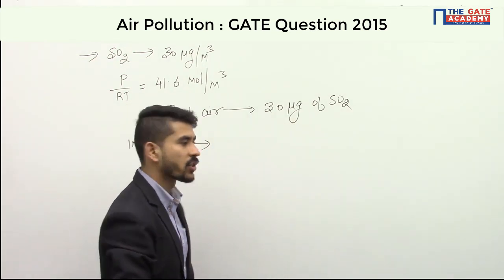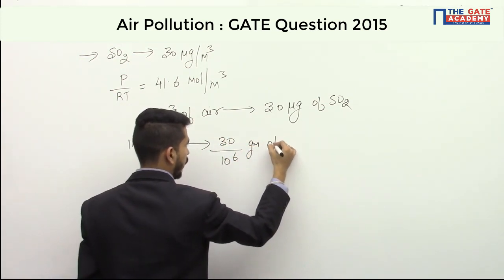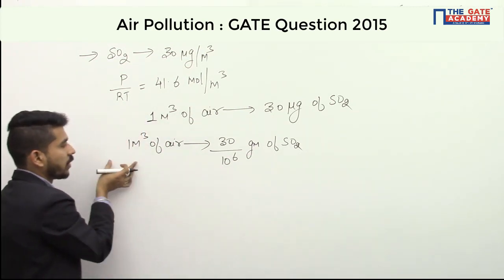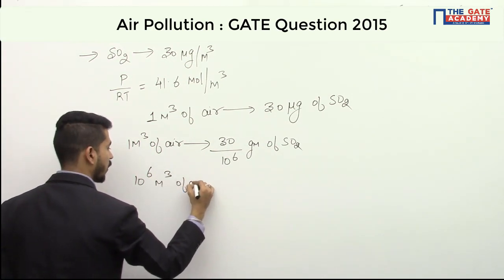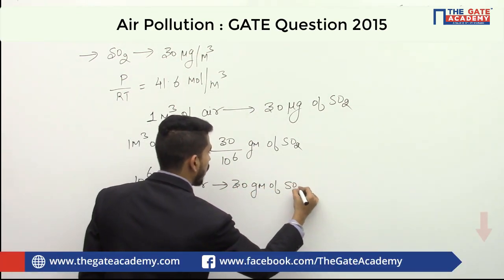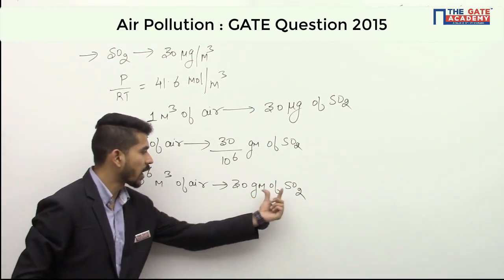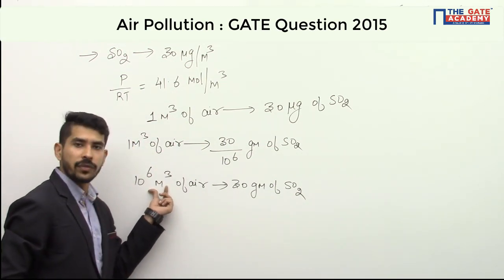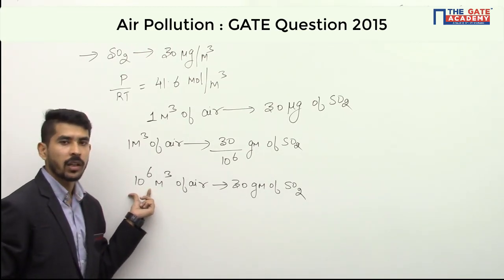So I can write this as 30 micrograms, which is 30 divided by 10⁶ grams of SO₂. Taking 10⁶ to the left-hand side, in 10⁶ meter cubes of air, we have 30 grams of sulfur dioxide. That means in these many parts of air, 30 grams of SO₂ is present — one quantity is units of volume and the other is units of weight.